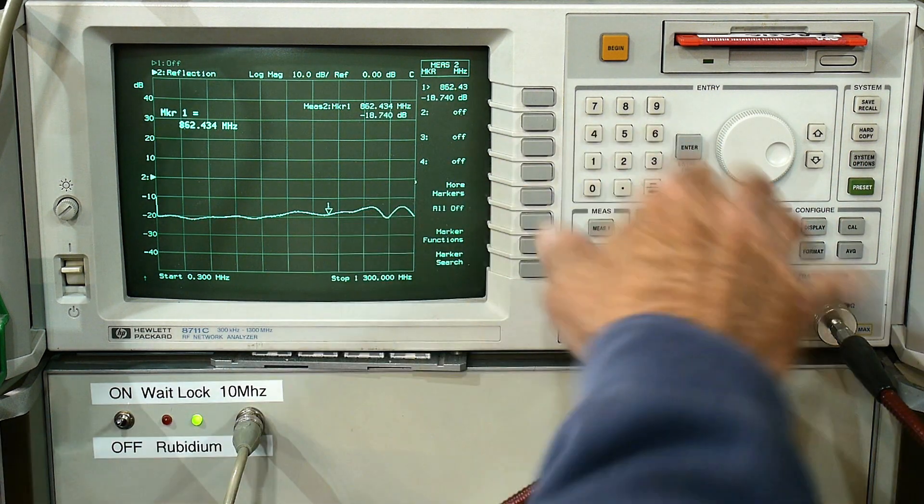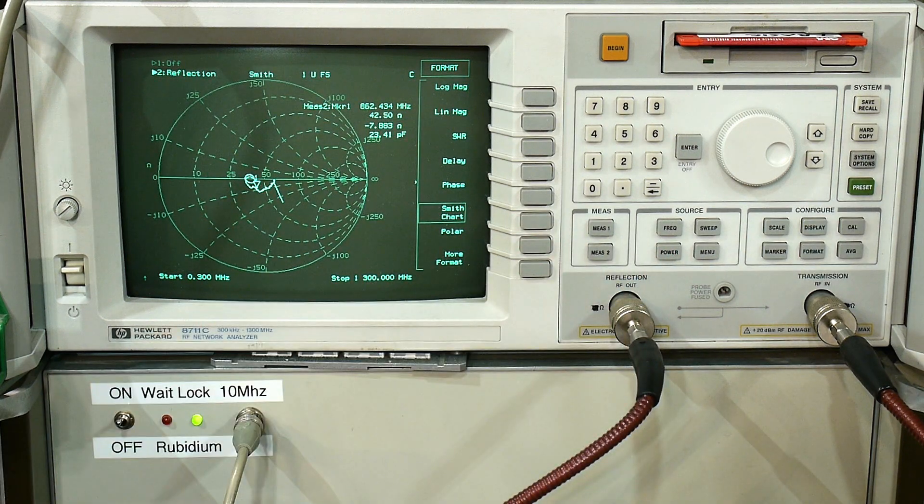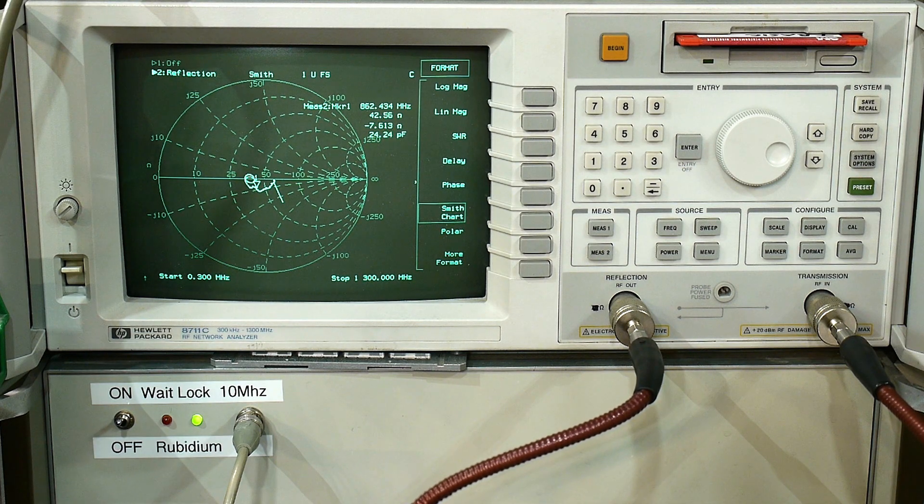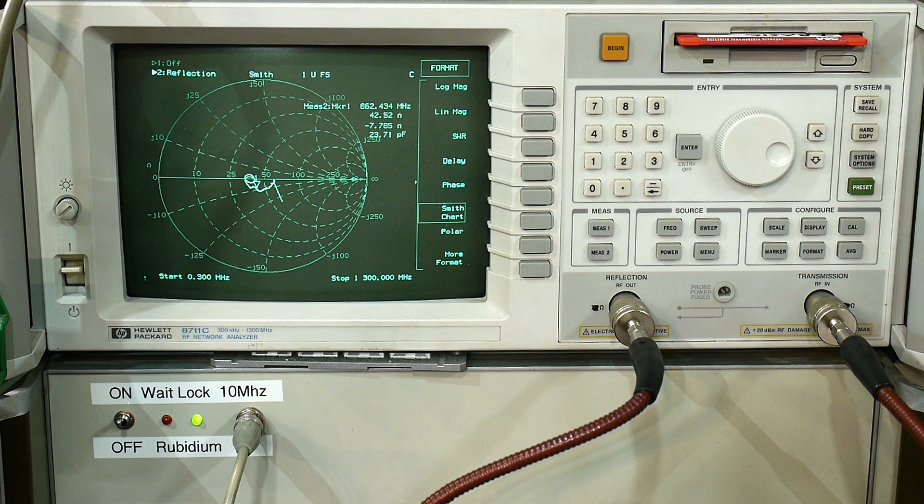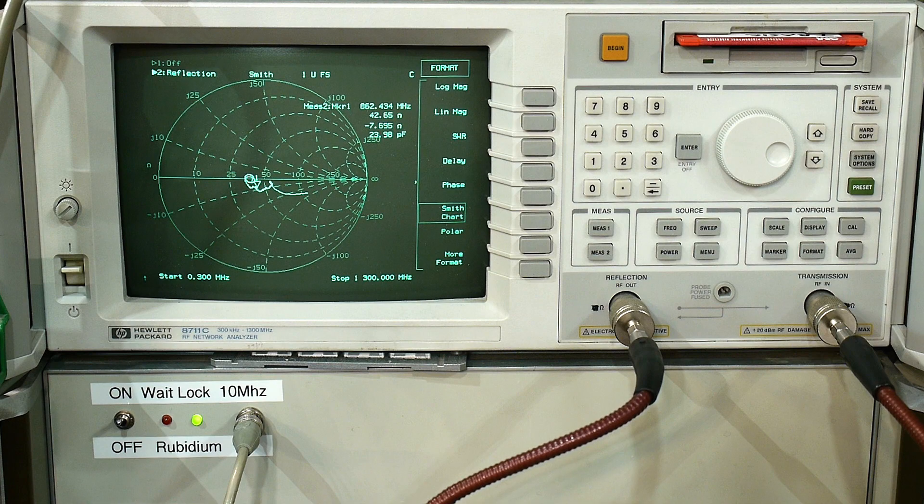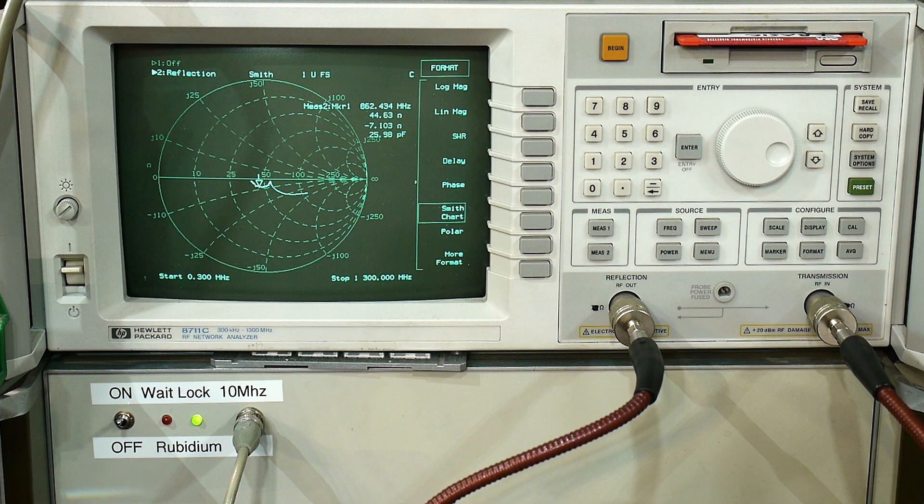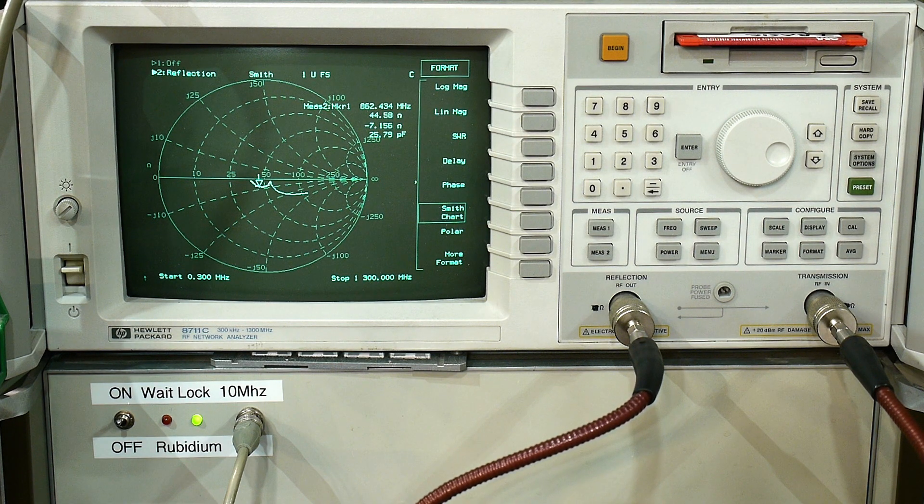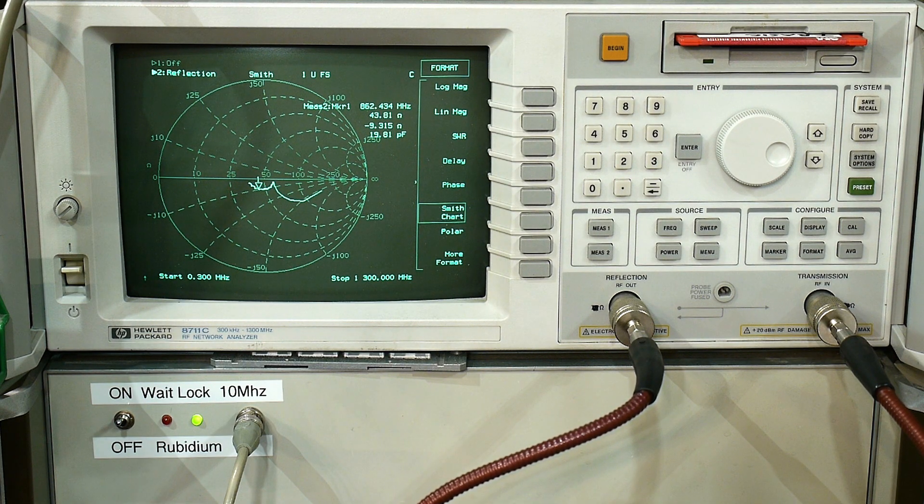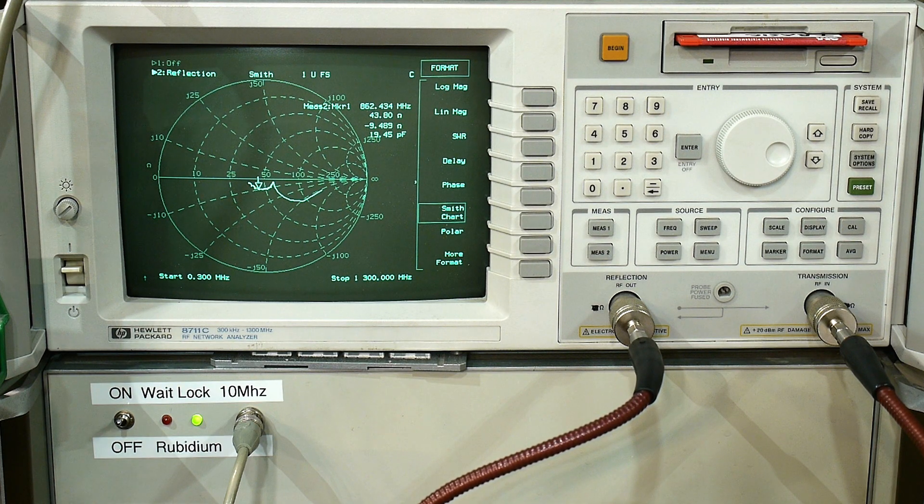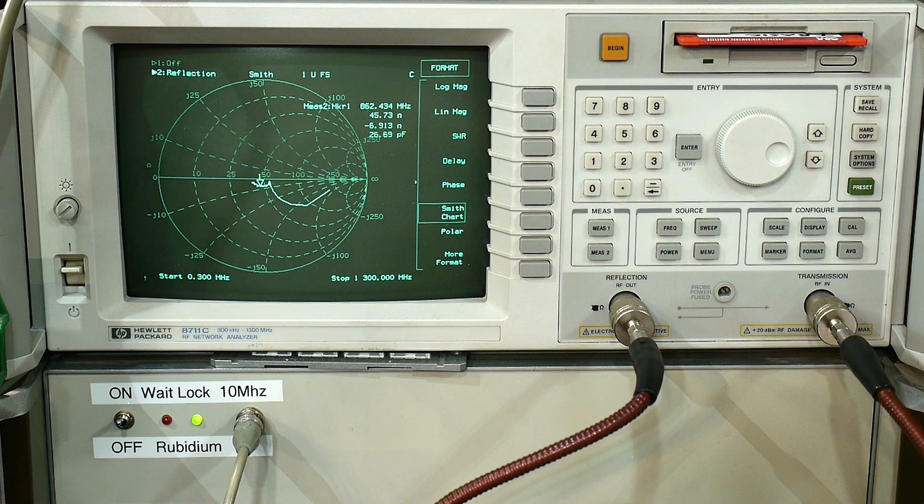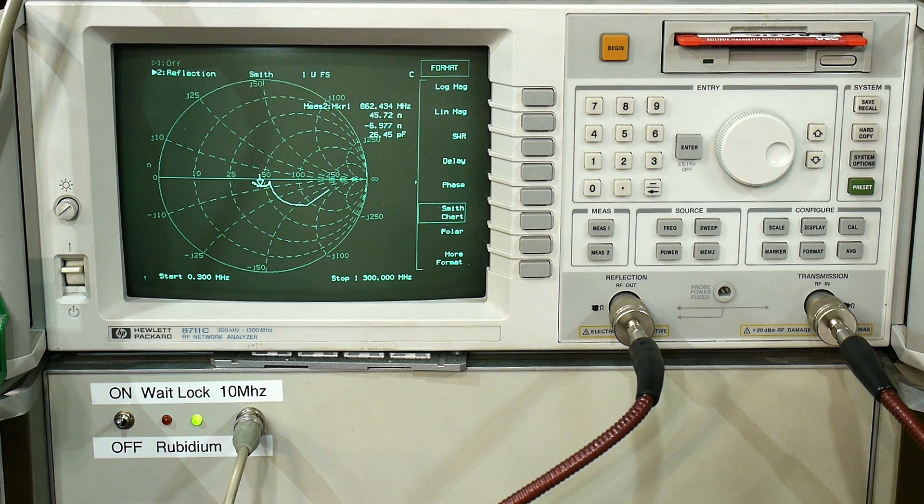Alright. So you want to see the same thing with Smith charts. We can turn on the Smith chart. We get a little curly cues in there. Let's go back to 10 dB. There's 10 dB. Let's go to 20. There's 20. And then we'll go to 30. And yeah, there we go. So yeah, not great.